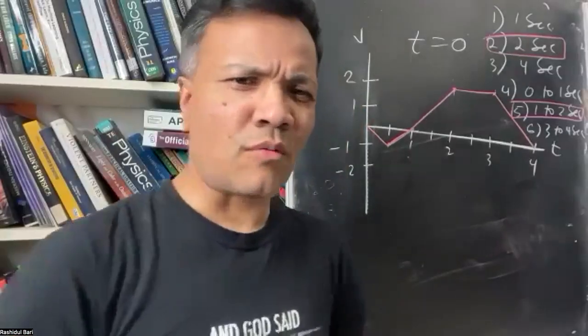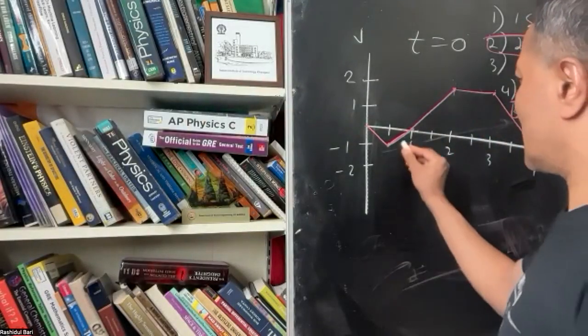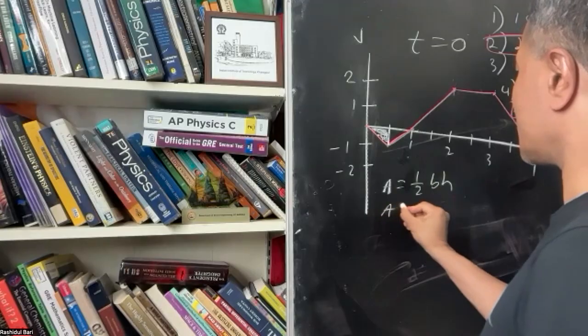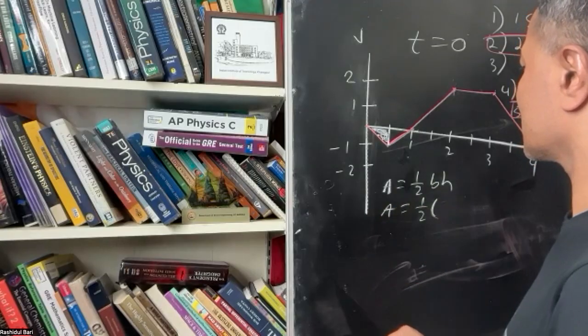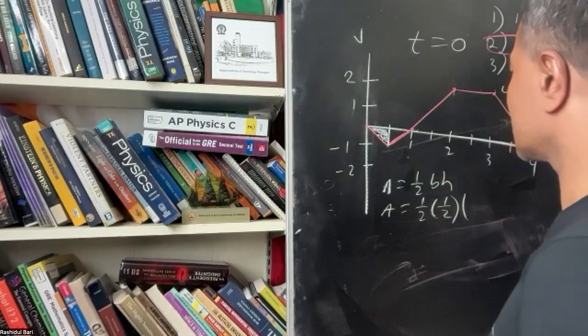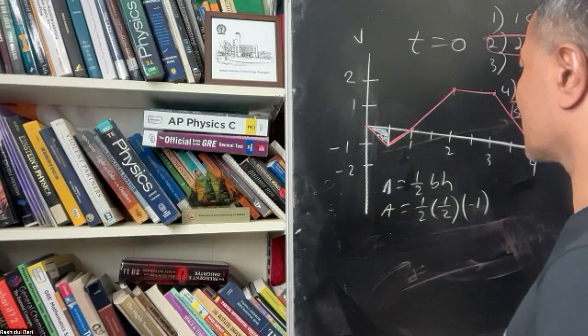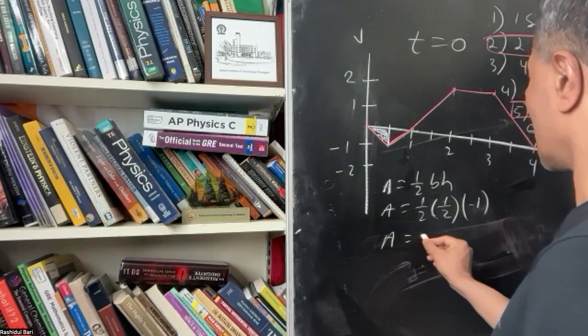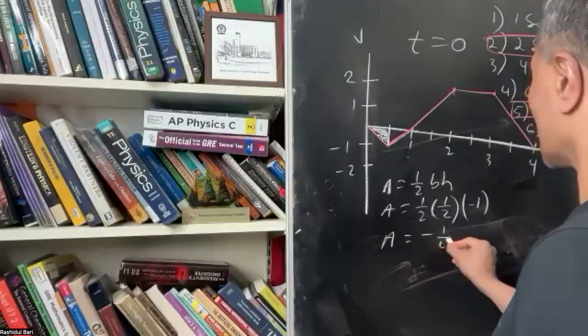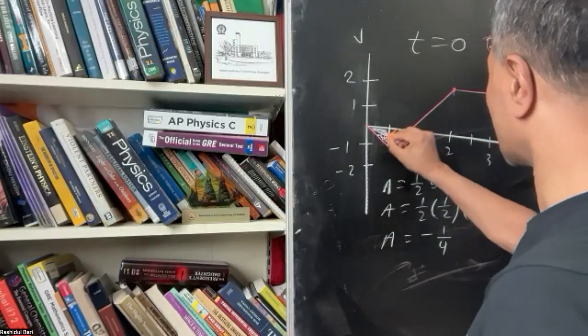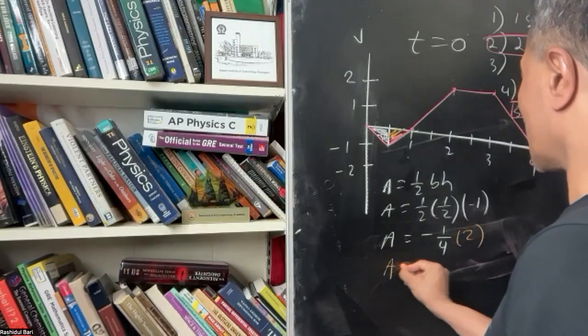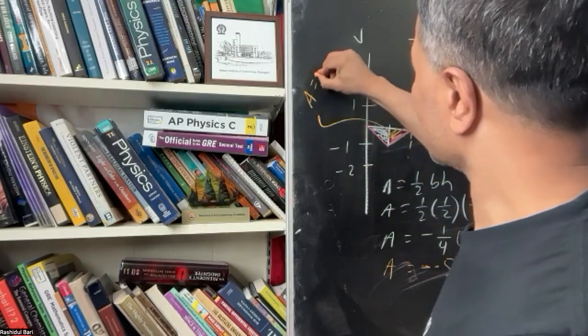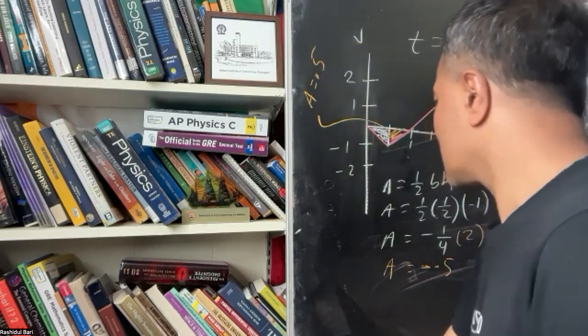That's correct. Now I'm going to show my way. Let's find the area here. Area is half base times height. Base is 1, height is negative 1, so area is half times 1 times negative 1. The total displacement is negative one-fourth. If I multiply by 2, the area is negative 0.5. That means the total displacement at t equals 1 is minus 0.5 meters.